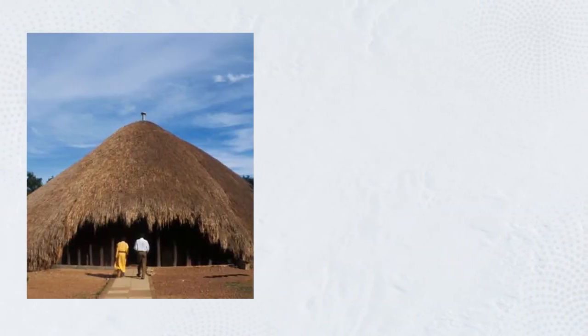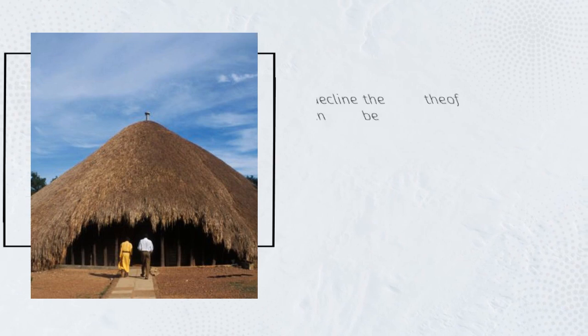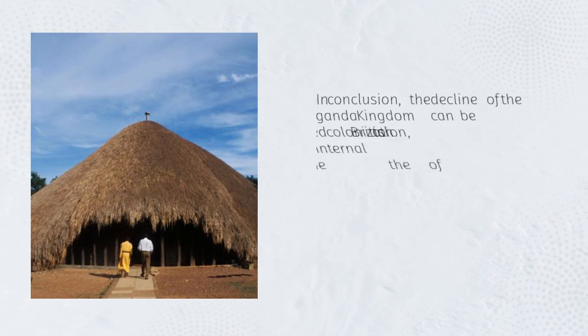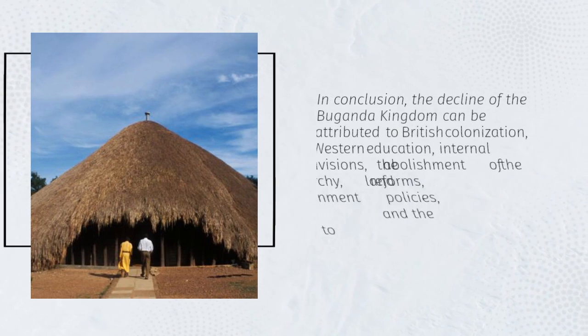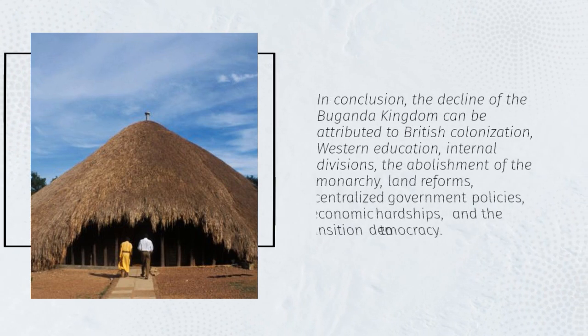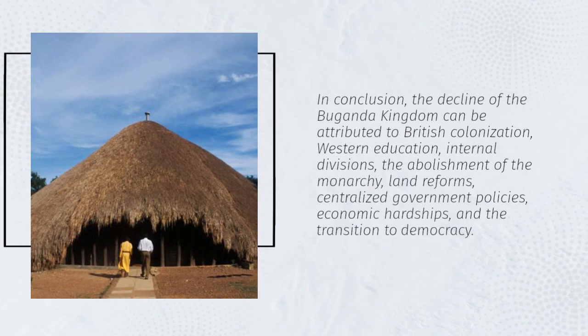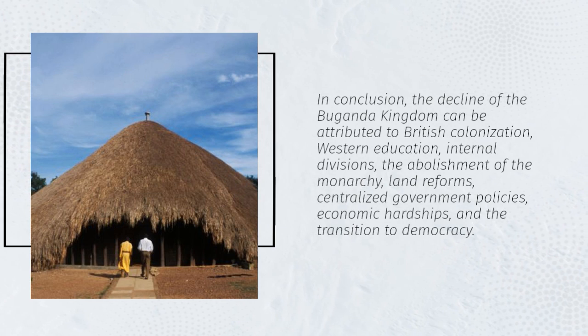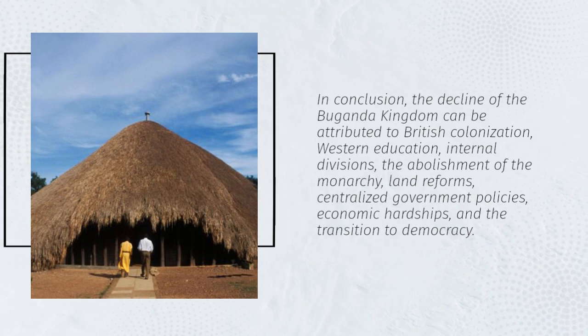In conclusion, the decline of the Baganda Kingdom can be attributed to British colonization, Western education, internal divisions, the abolishment of the monarchy, land reforms, centralized government policies, economic hardships, and the transition to democracy.